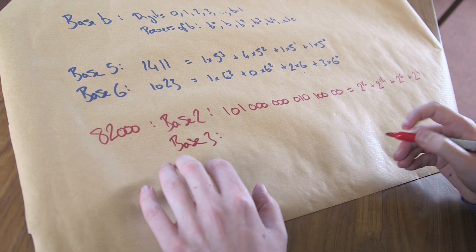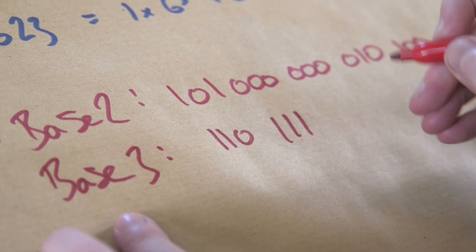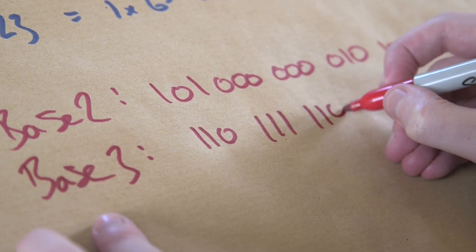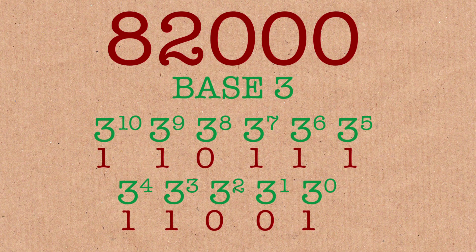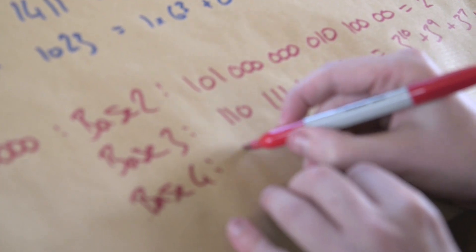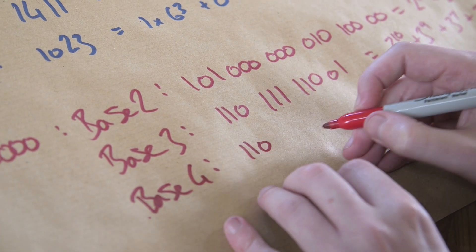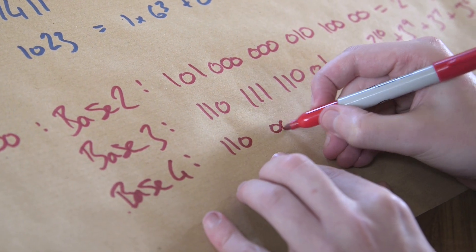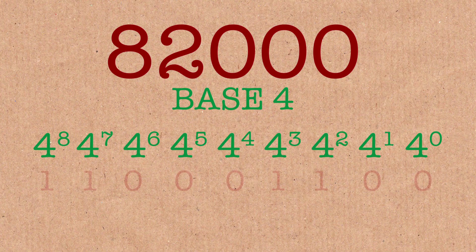In base 3, it looks like this: 1, 1, 0, 1, 1, 1, 1, 1, 0, 0, 1. Let's try it in base 4 — it looks like this: 1, 1, 0, 0, 0, 1, 1, 0, 0.